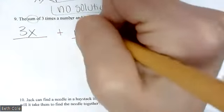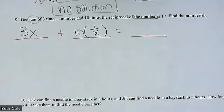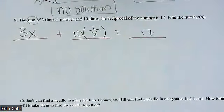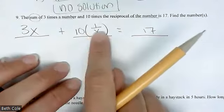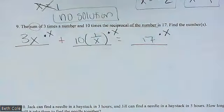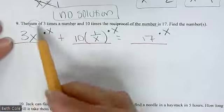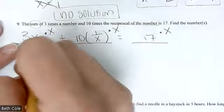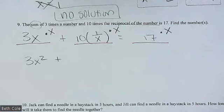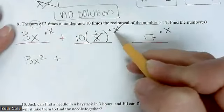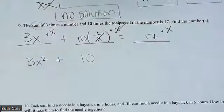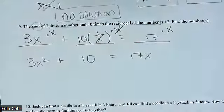So you guys got through that. 'Is' means equals — so equals 17. There's the problem: three X plus ten times one over X equals 17. Now we just have to solve it. What's the only thing in a denominator? X. So you're going to multiply all of these by X to make it cancel. What do you have for the first term? Three X squared. Plus — watch what happens to these X's here: bye bye, so it's just 10. Equals 17 times X, which is 17X.